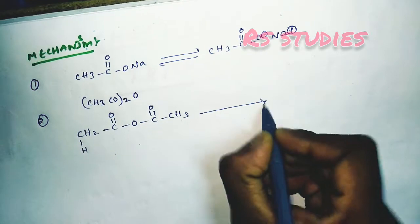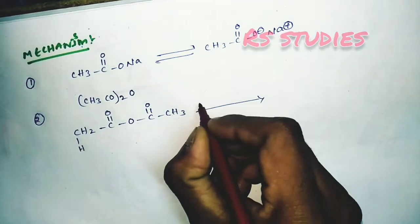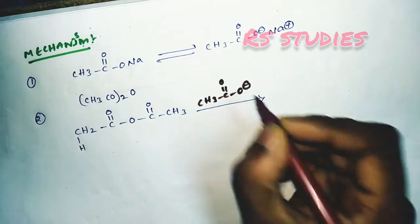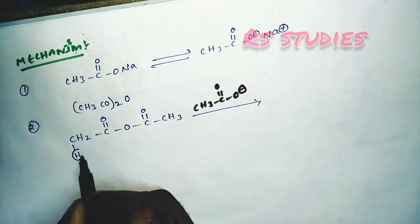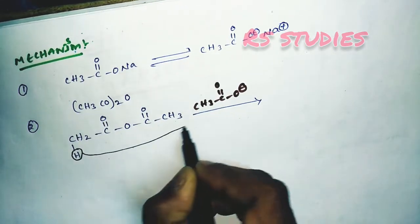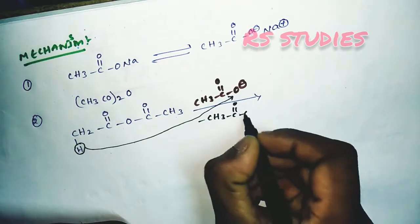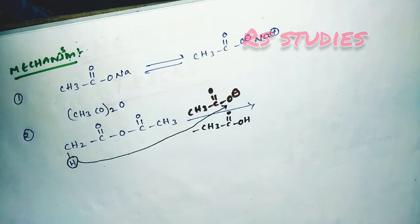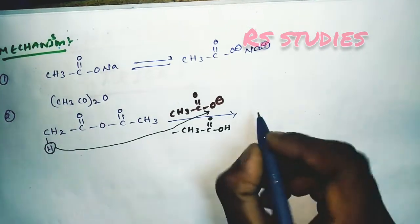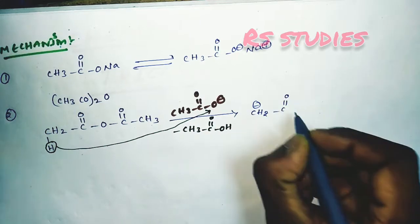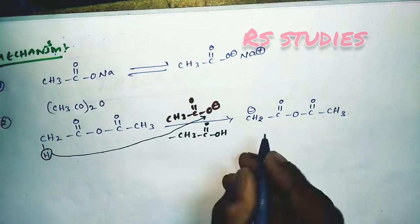The acetate ion CH3COO⁻ reacts with acetic anhydride CH3-CO-O-CO-CH3. This gives a carbanion: CH2⁻-C(=O)-O-C(=O)-CH3, i.e., CH2⁻ attached to C(=O), then C(=O), then CH3. Second step is now completed.